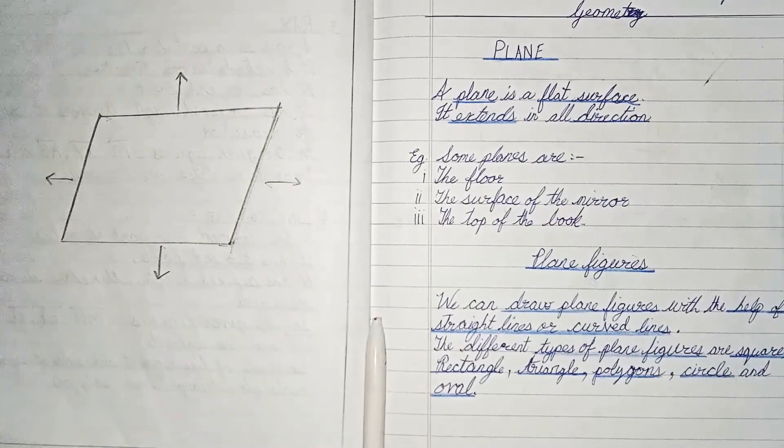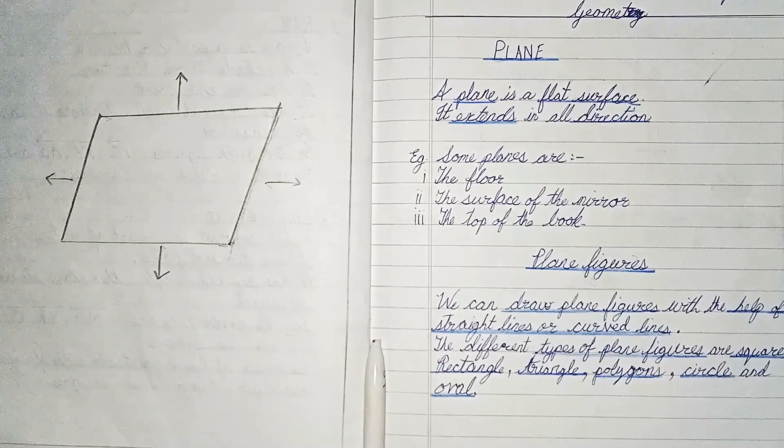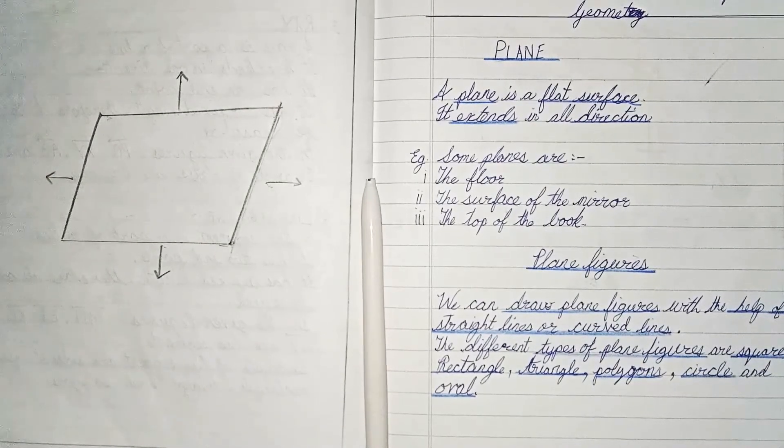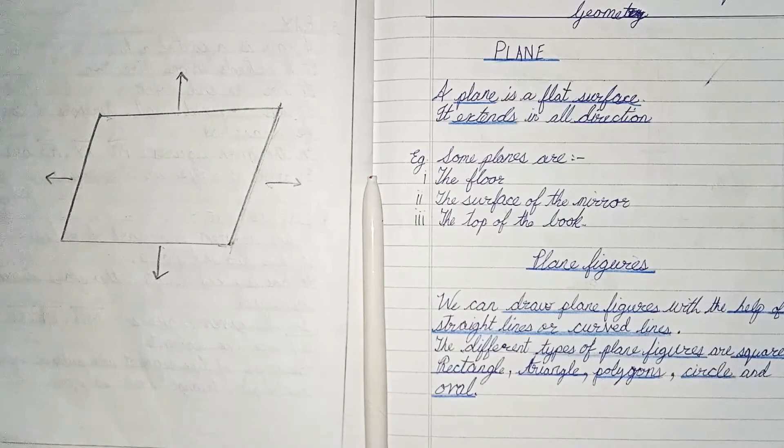Different types of plane figures are square, rectangle, triangle, polygons, circle, and oval.